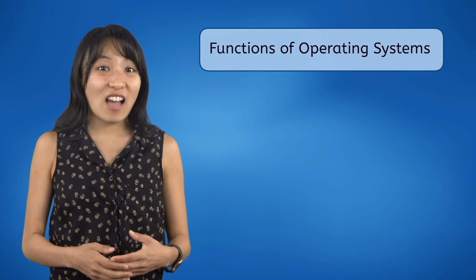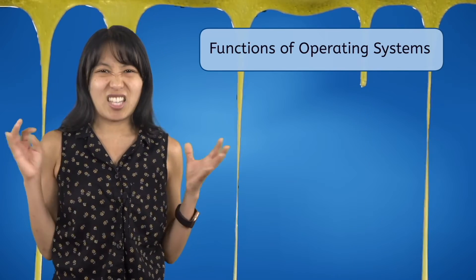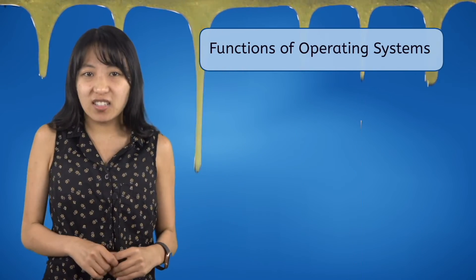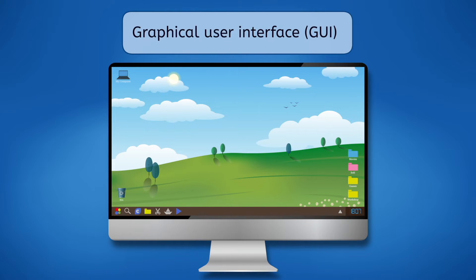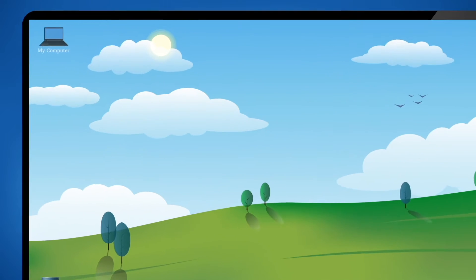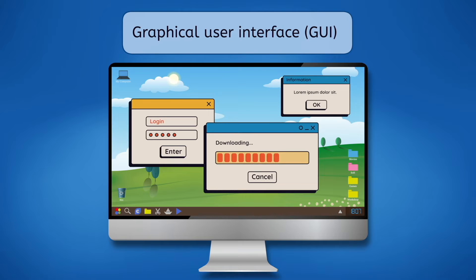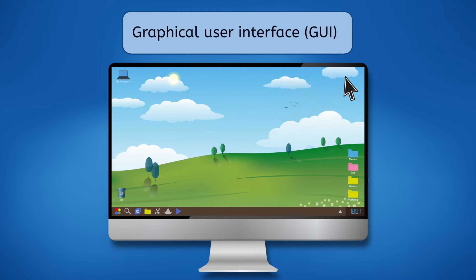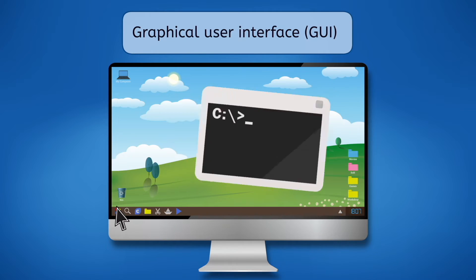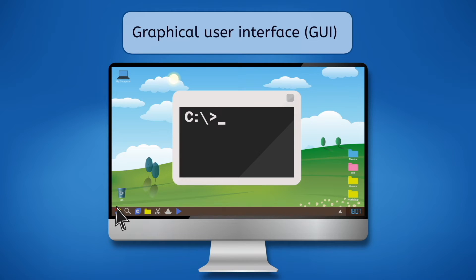Most computers today have a GUI instead — G-U-I — an acronym that stands for Graphical User Interface. A GUI is a more visually appealing user interface which uses graphical icons and on-screen windows to display data. Users control an on-screen cursor to interact with those graphical features in order to input commands. Most GUIs even include a built-in command line interface window for people who know how to use them.